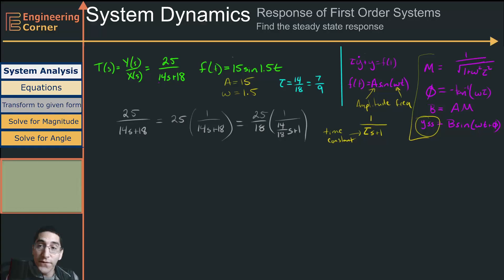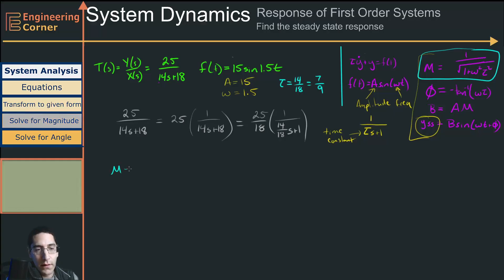So now that we're in this form, we're going to start with our magnitude. And I'm going to deal with the 25 over 18 in a minute. But with this magnitude, I'm going to have 1 over the square root of 1 plus omega—omega is 1.5—squared times tau, which is 7 over 9 squared. And this is all under the square root. So let's figure out what this is equal to.